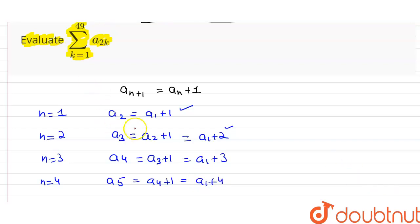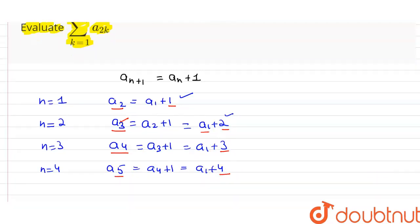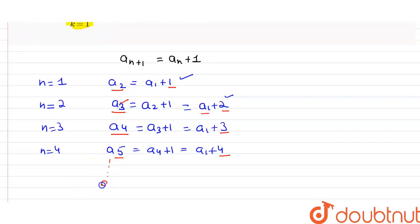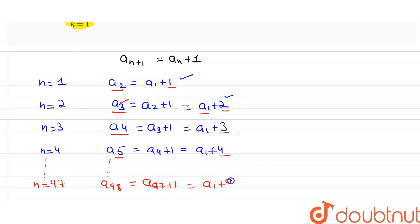We observe the pattern: a2 = a1 + 1, a3 = a1 + 2, a4 = a1 + 3, a5 = a1 + 4. Similarly, putting n equal to 97 gives a98 = a97 + 1 = a1 + 97.